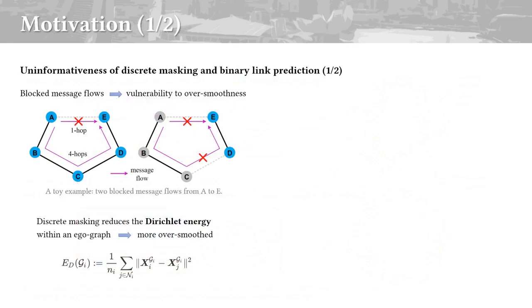Bandana's motivation is the uninformativeness of traditional masked graph autoencoders in terms of learning of graph structure. From a global perspective, the long-range message flows are stretched or blocked by the indiscriminate selection of random edge masking.